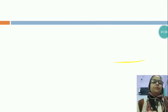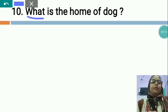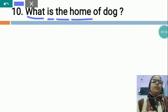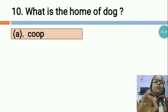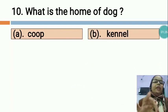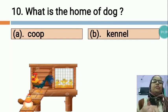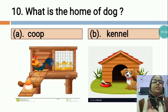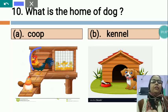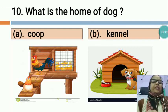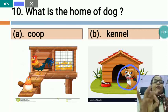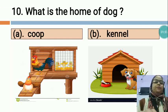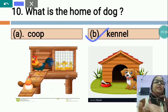Now the next question is: WHAT IS THE HOME OF A DOG? Option A is COOP and option B is KENNEL. This is the picture of a coop and this is the picture of a kennel. Coop is the home of hen. But kennel is the home of dog — you can see the dog here. So the correct option is B, kennel. The home of dog is kennel.